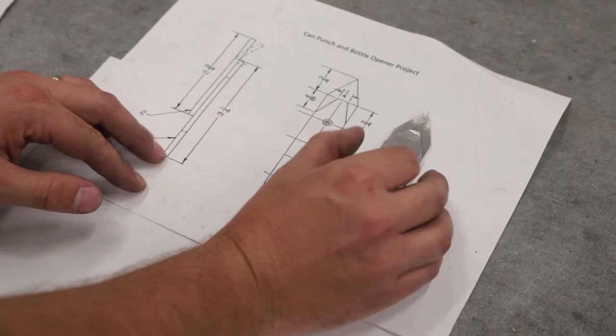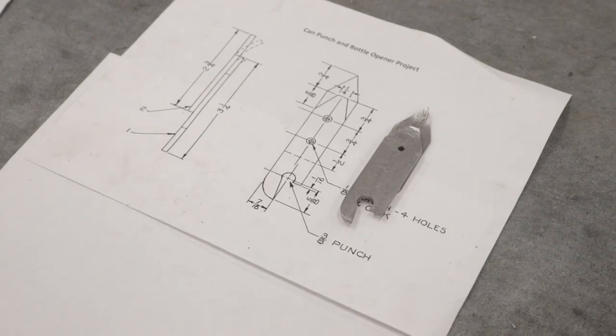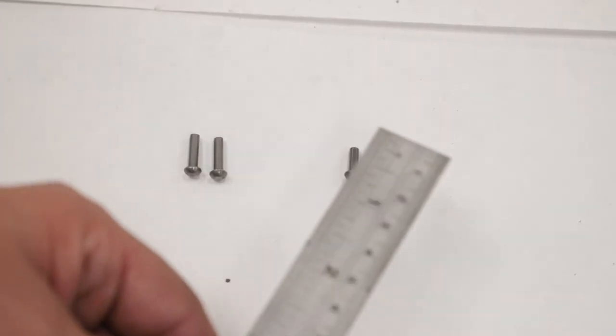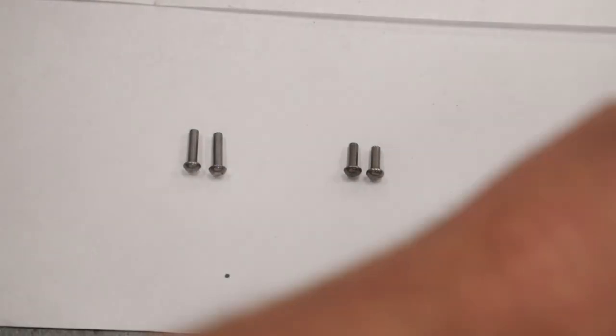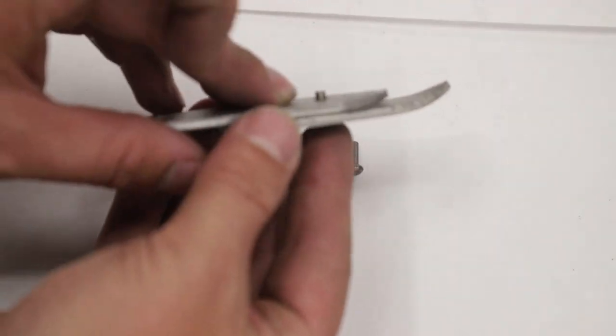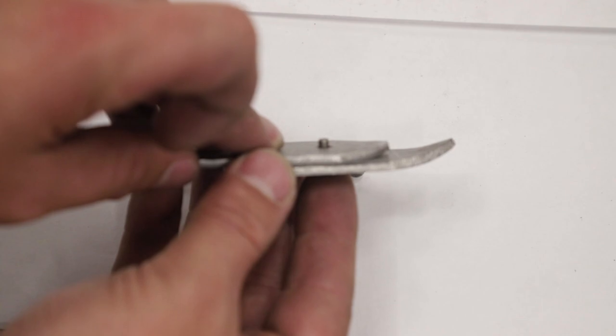We have two different sizes of rivets. Here I have half of an inch long and three eighths long. If you only use the three eighths, it's not going to stick out too far. Pop it through here, pop it through the back. You can see it sticks out just a little bit. If I use the half inch, you can see it sticks out a lot.